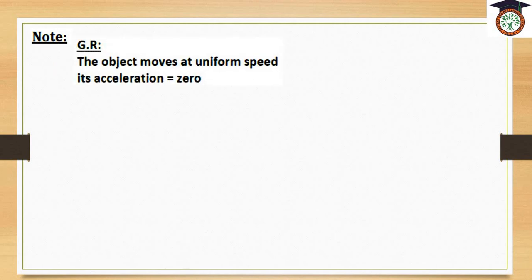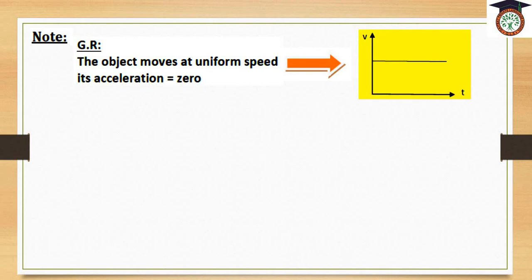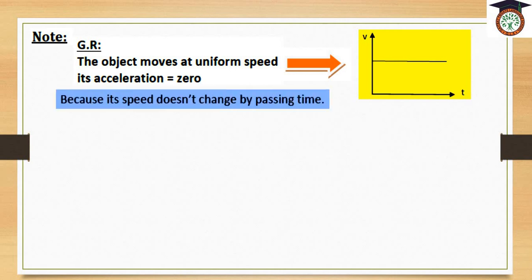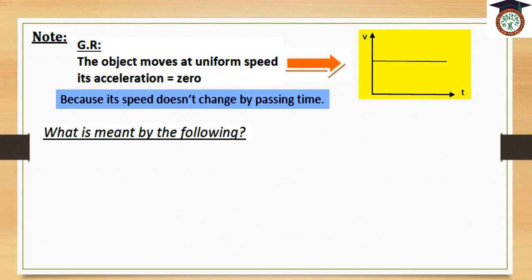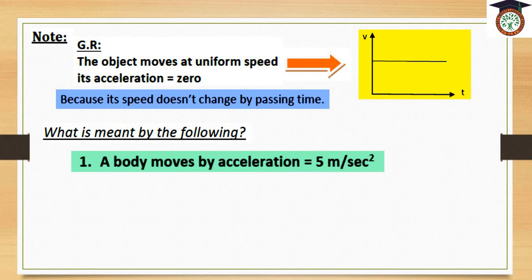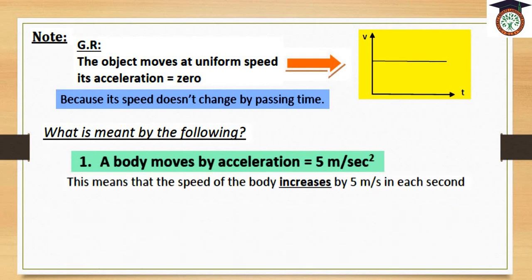Note — give reason: the object moves at uniform speed so its acceleration equals zero. Why? Because this graph represents an object moving with regular or uniform speed — a graph between speed and time — because the speed doesn't change as time passes. What is meant by: 'a body moves by acceleration 5 m/s²'? This means that the speed of the body increases by 5 meters per second in each second — increases because it is positive.